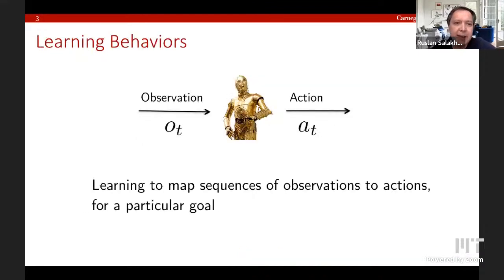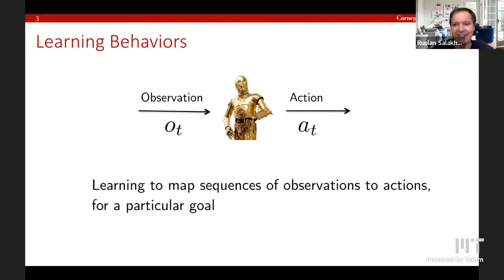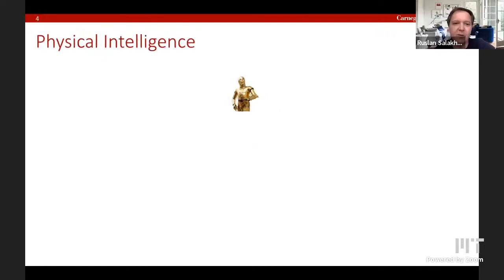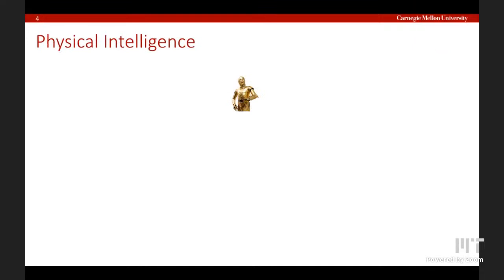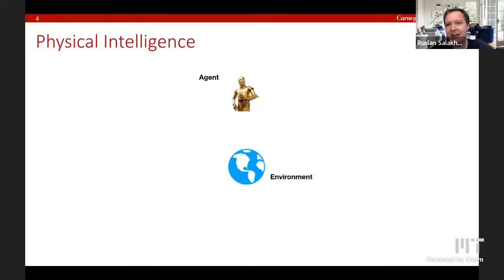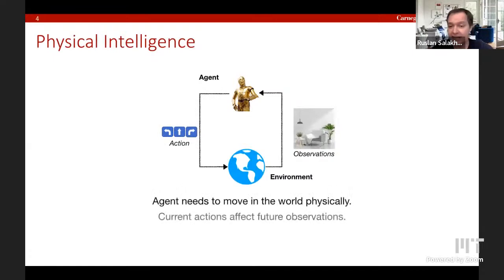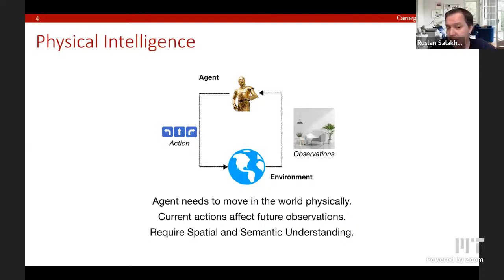When we think about embodied AI and reinforcement learning, we typically think about learning behaviors — how do we map observations to actions to achieve a particular goal? If we think about physical intelligence, an agent observes the environment and takes an action. Agents need to be moving around the world physically, and the actions you take now will affect your future observations. You need some form of spatial or semantic understanding of the world.